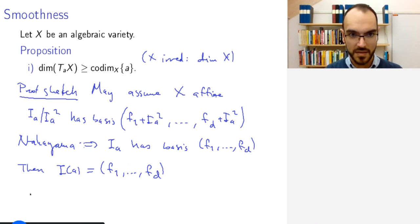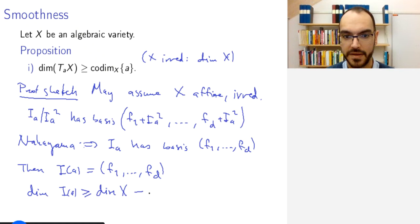And we also may assume that X is affine and irreducible by again shrinking as much as we want. So what about the dimension? Well, the dimension of I of A is at least the dimension of X minus D. This you get by applying Krull's Hauptidealsatz D times to get this.